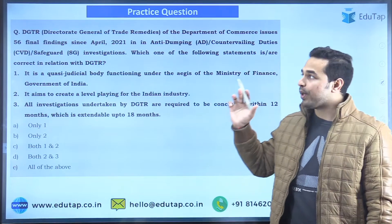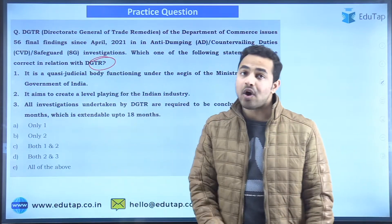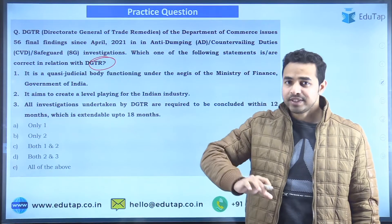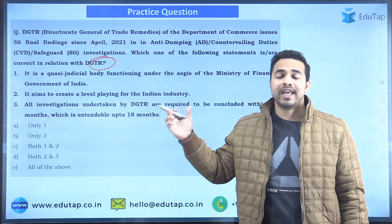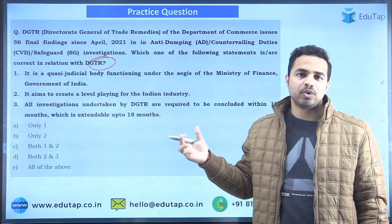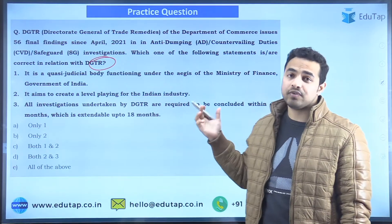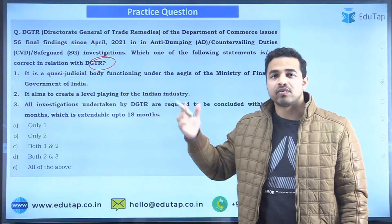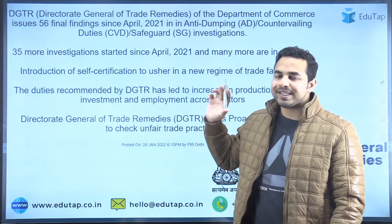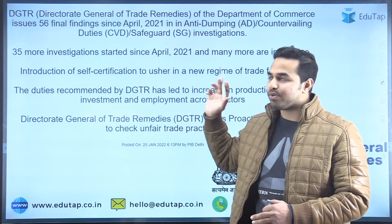The very first practice question of today's session is based on DGTR, which stands for the Directorate General of Trade Remedies. This particular body was recently in the news. Let's see what exactly is the functioning of this body and why it was formed. From the headline of the PIB itself, DGTR has recently issued 56 final findings since April 2021.